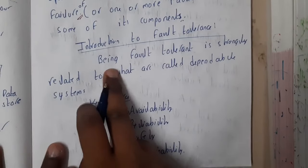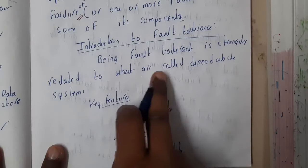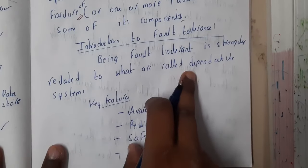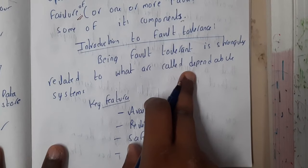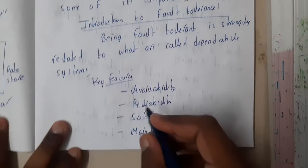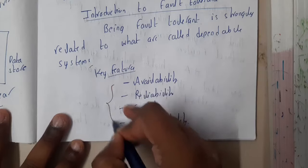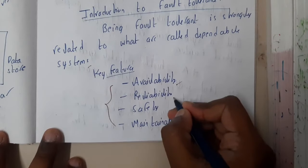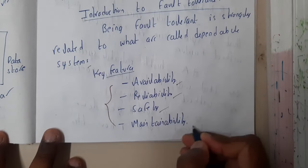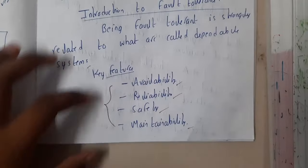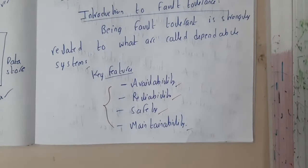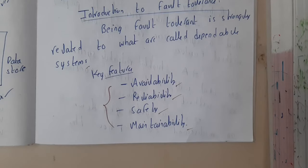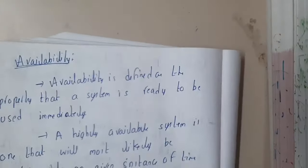Being fault tolerant is strongly related to what are called dependable systems. There are a few key properties: availability, reliability, safety, and maintenance. By using these, we can achieve fault tolerance. Let's start with availability.